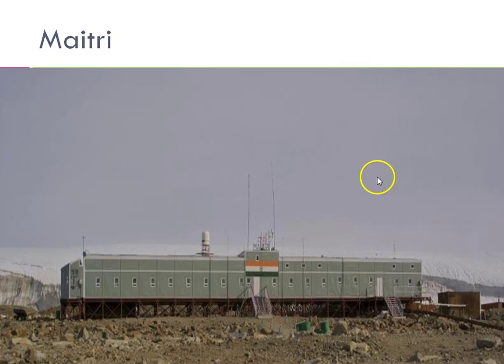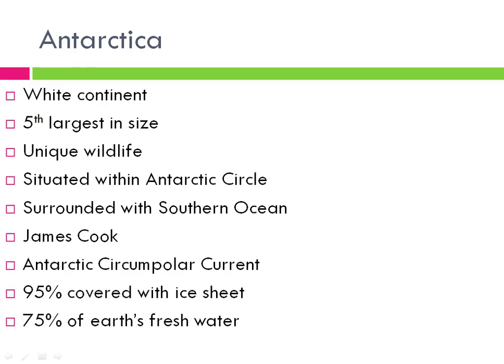Let's go through some details of Antarctica. It is known as the white continent and is the fifth largest in size. It has unique wildlife — for example, penguins. You won't find polar bears here; polar bears are only in the northern hemisphere, near the North Pole. In the same way, you don't find penguins in the northern hemisphere. Penguins are found only in the southern hemisphere, and some species live near the equator as well, but not at the North Pole.